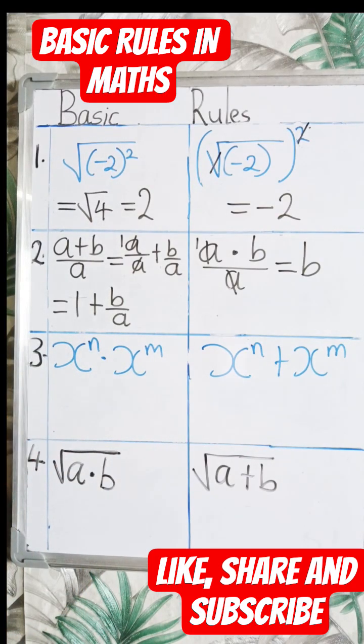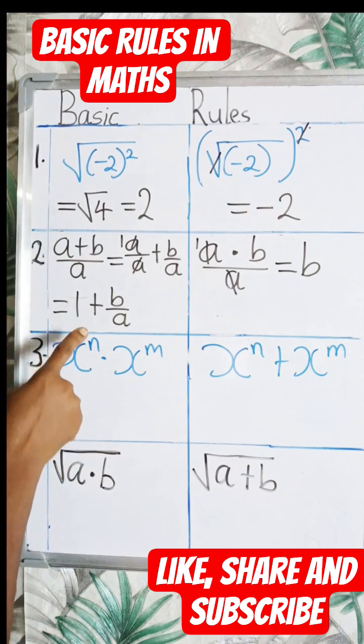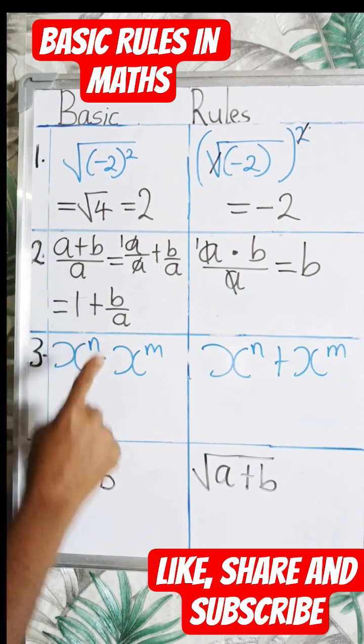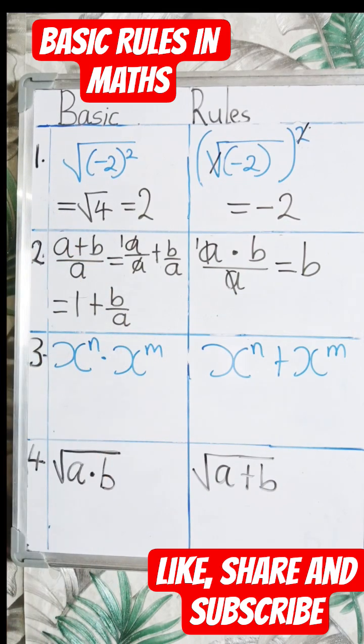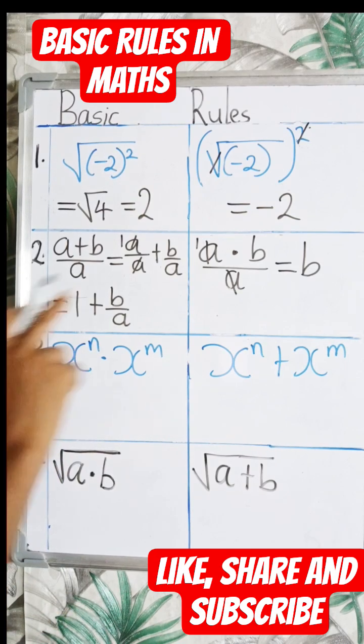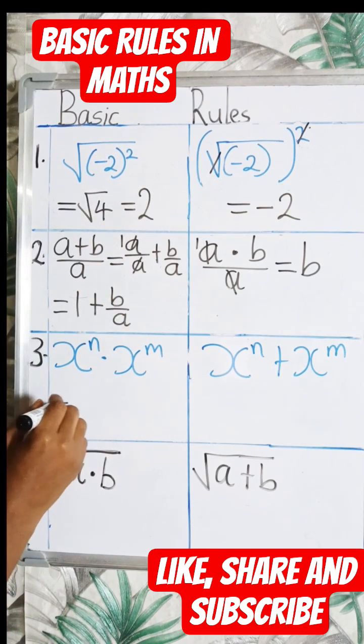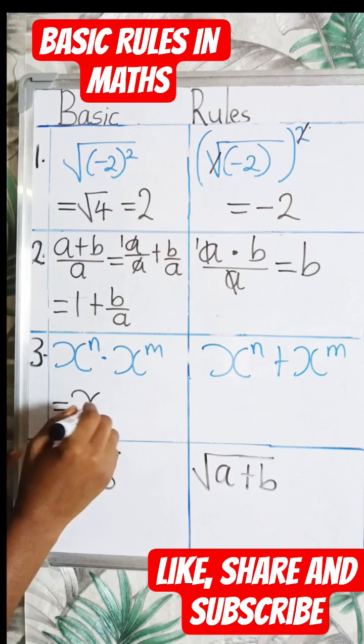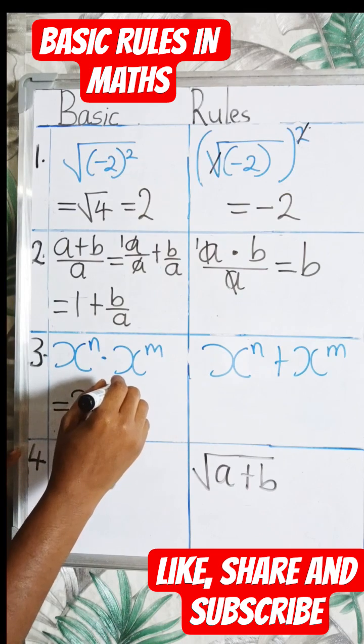Now the next one, we have x raised to the power n times x raised to the power m. According to the law of indices, what do we do? We take one of the x's and add the powers, so this equals x raised to the power n plus m.